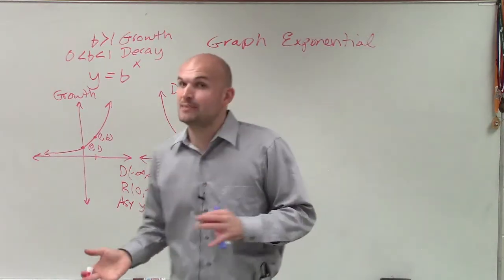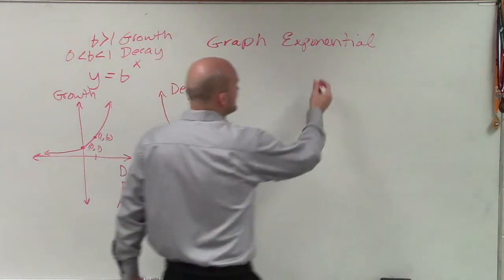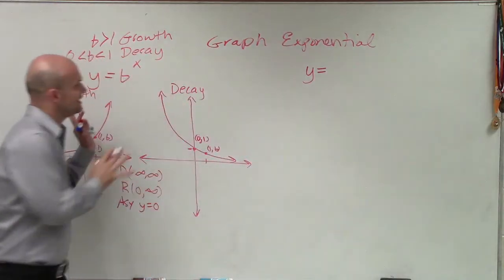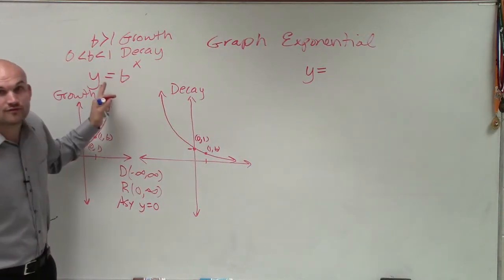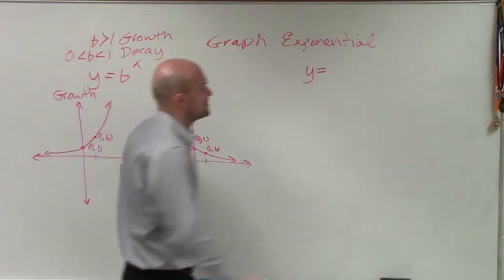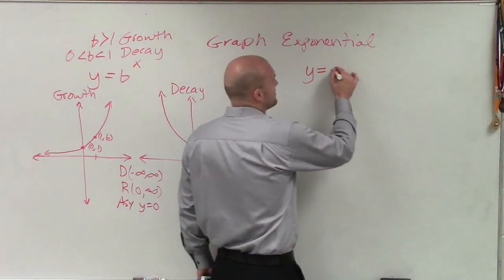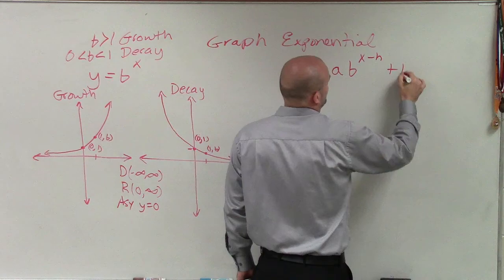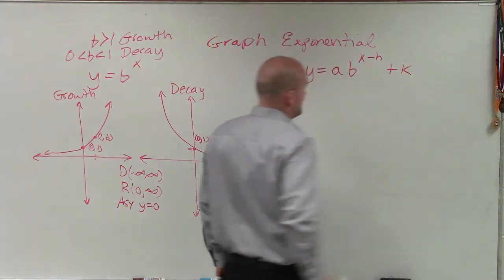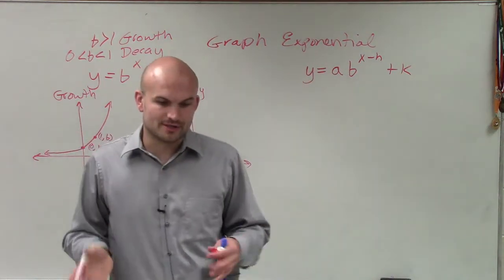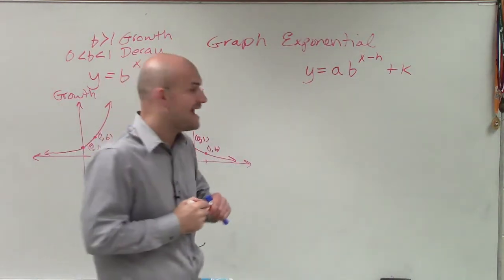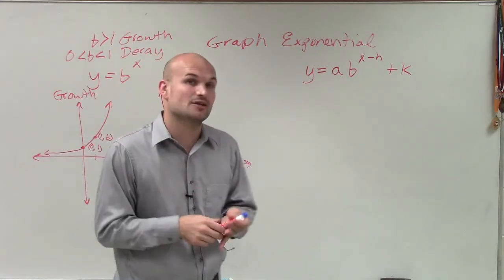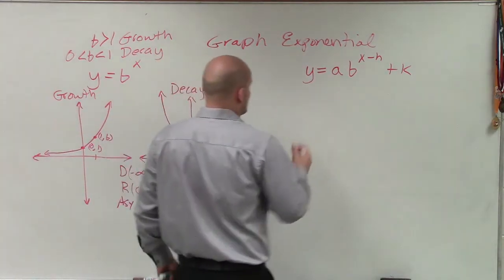Now let's talk about transformations. A lot of times when graphing exponential functions, they're not just going to be in a simple decay or growth format — they're going to have some transformations. The general form is a · b^(x − h) + k, and we need to remember what each part of that transformation represents.